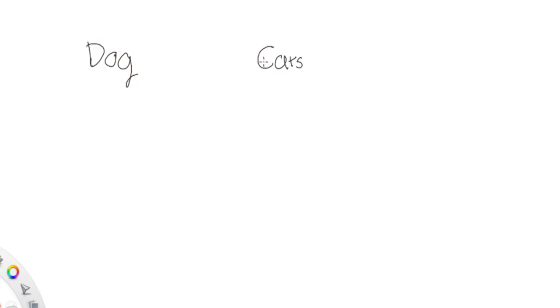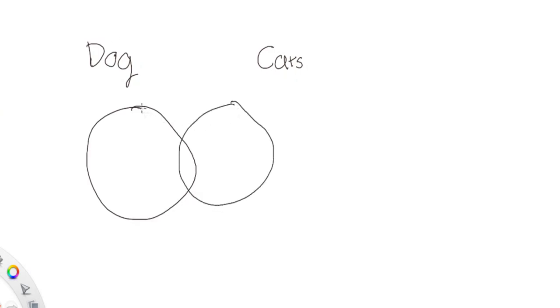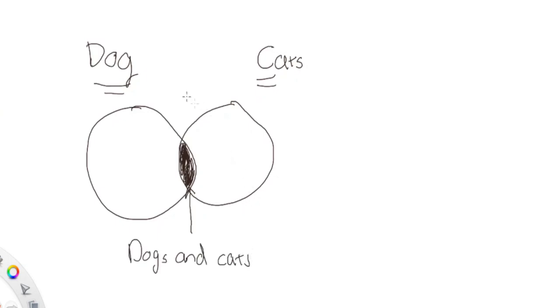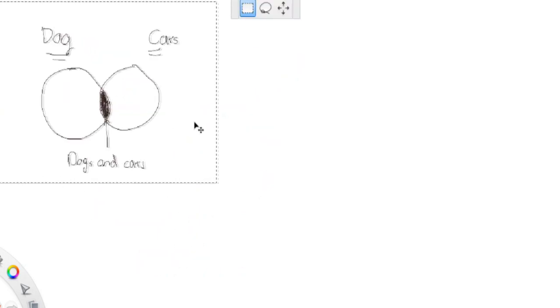Let's say I have a group of people who like dogs, and also a group of people who like cats. If I want to find the people who like both cats and dogs, a good way to do it is to draw a Venn diagram. On one side you have people who like dogs, on the other side people who like cats, and the intersection in the middle represents the people who like both dogs and cats.